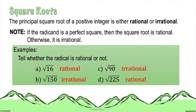For radicals that are rational numbers, we can easily get their value. For letter A, the square root of 16 is equivalent to positive 4 if we are referring to the principal square root. And the square root of 225 is equal to positive 15.